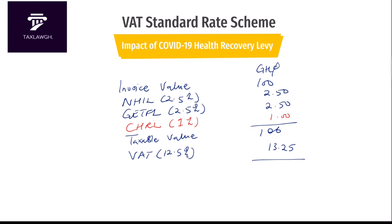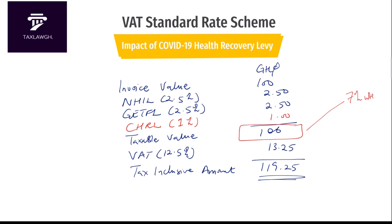You then compute VAT at the rate of 12.5% on this 106 cedis base, which gives 13.25 cedis. Adding everything together gives a total tax-inclusive amount of 119.25 cedis. For those required to withhold tax under the VAT withholding regime, the value on which you'll be withholding will now be this 106 cedis figure — that is the base on which the 7% withholding VAT will be applied.